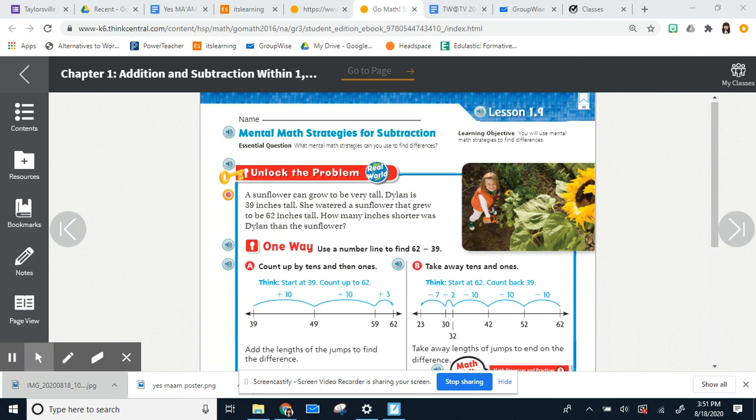So we're going to look at unlock the problem first. A sunflower can grow to be very tall. Millen is 39 inches tall. She laddered a sunflower that grew to be 62 inches tall. How many inches shorter was Delen than the sunflower? So if you have ever seen sunflowers planted in a field, they can get very, very tall. So what we're going to do to solve this problem, 62 minus 39, we're going to use number lines.